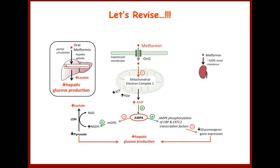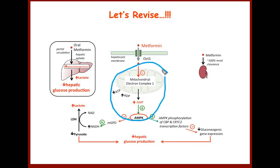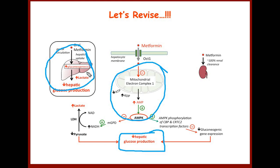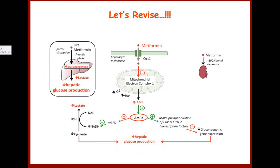Thank you very much, that is all for today's lecture. Two important things to remember: first, by disturbance of the mitochondrial electron transport chain, metformin activates the AMPK pathway and thereby produces a reduction in gluconeogenesis. Second, the mechanism by which it produces lactic acidosis. If there is any doubt, please put it in the comment box. Hope you have enjoyed this lecture.